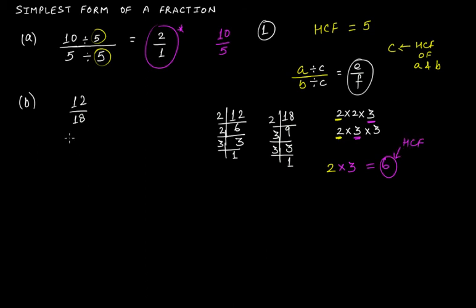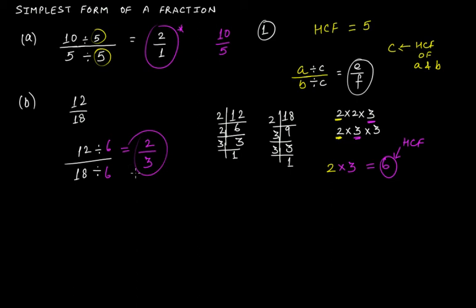So if I divide 12 and 18 by 6: 12 divided by 6 is 2, and 18 divided by 6 is 3. So 2 by 3 is the simplest form. To confirm, the only common factor of 2 and 3 is 1 itself.